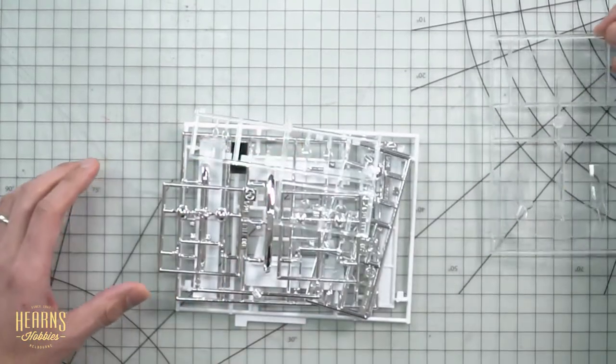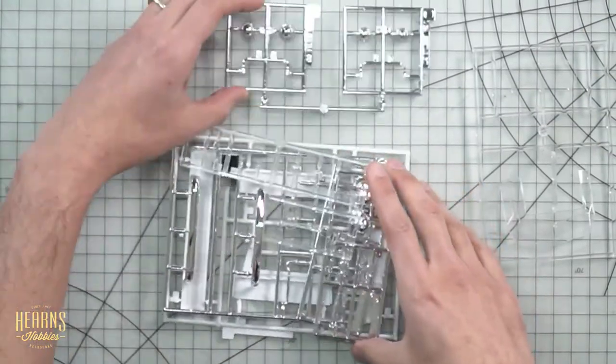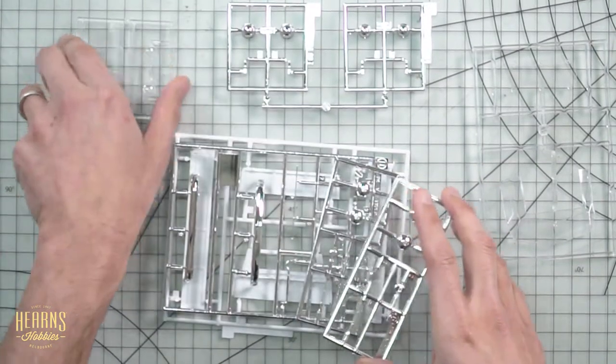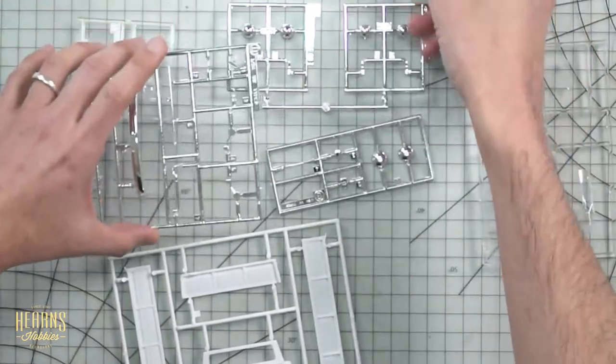All right. Let's move on to the next bag. This one here. All right, so I have some clear parts. Chrome parts. Three sets of chrome parts. And some body components. Actually, there's a lot of chrome parts here.